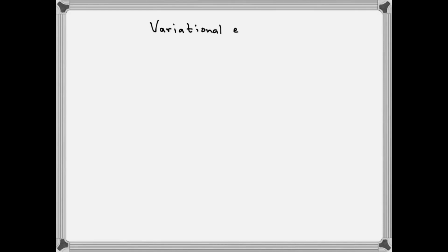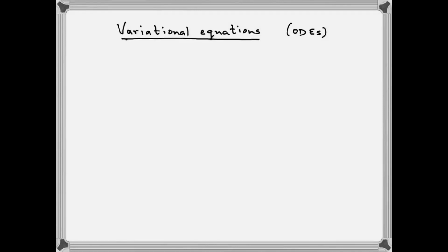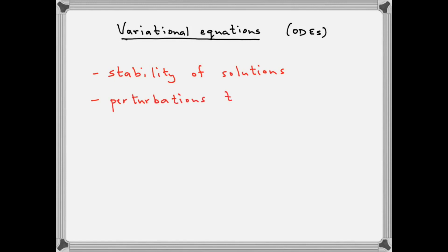We're going to be talking about variational equations in the context of ordinary differential equations. Variational equations occur in both theoretical and practical contexts in the study of differential equations. Theoretically they occur when we're trying to study stability of solutions, and practically they occur when we're trying to study how small perturbations evolve. It's the second way of looking at variational equations which we'll start with to motivate the discussion.